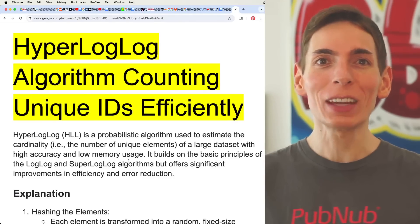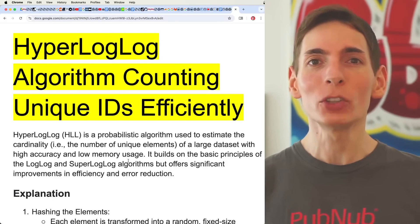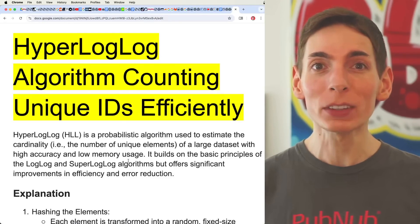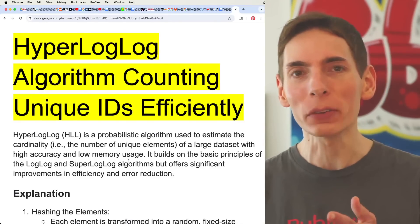HyperLogLog - you may have heard of this. It's a way to count cardinality within a data set. Cardinality is just the unique number of IDs, sort of like a set, the number of unique elements in a list. And that's what this algorithm is for, it's literally all it is, it's just a counting algorithm.